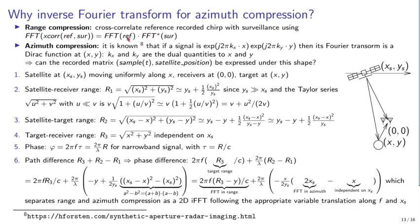This handles range processing. For azimuth compression, referencing an excellent SAR tutorial: a signal shaped like exp(j·2π·k·r) has a Fourier transform that is a Dirac at (x, y). If the radar signal can be expressed as a product of exponentials exp(j·2π·k·x), where k is the dual Fourier quantity and x is the real spatial quantity, then azimuth and range separate, and the target position can be recovered.